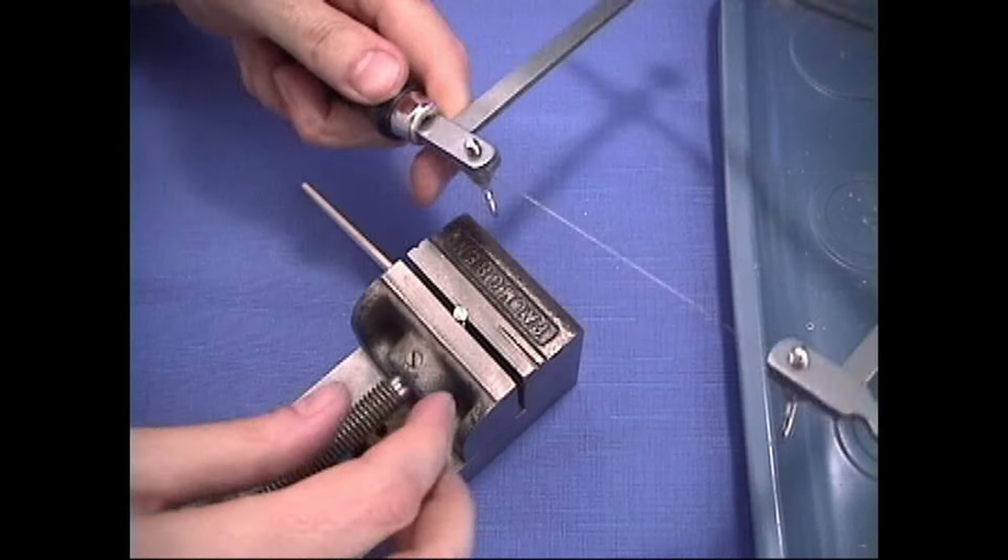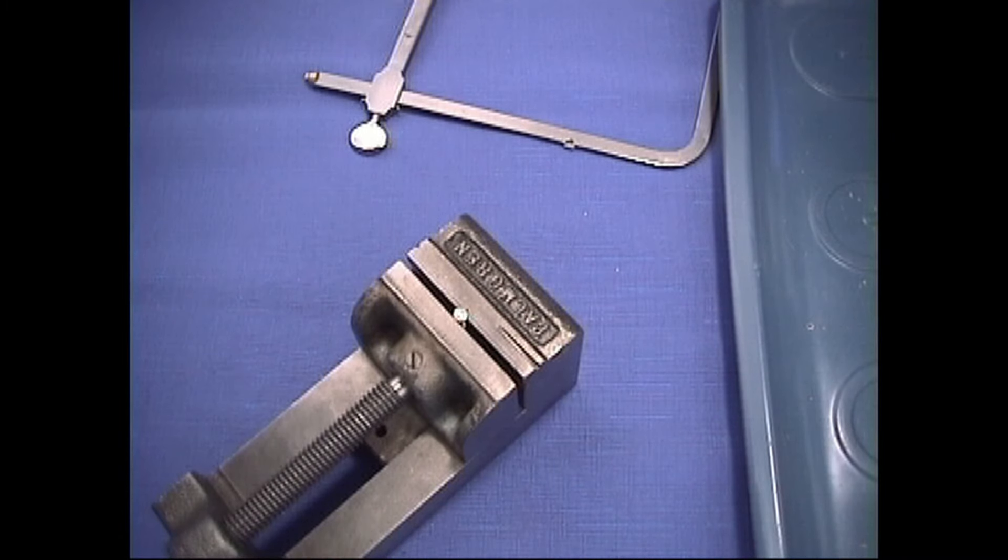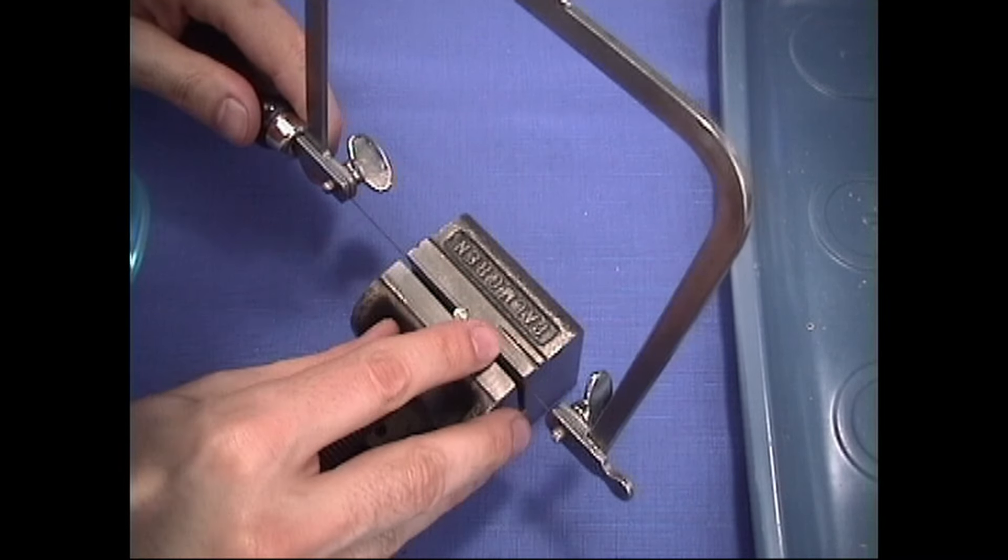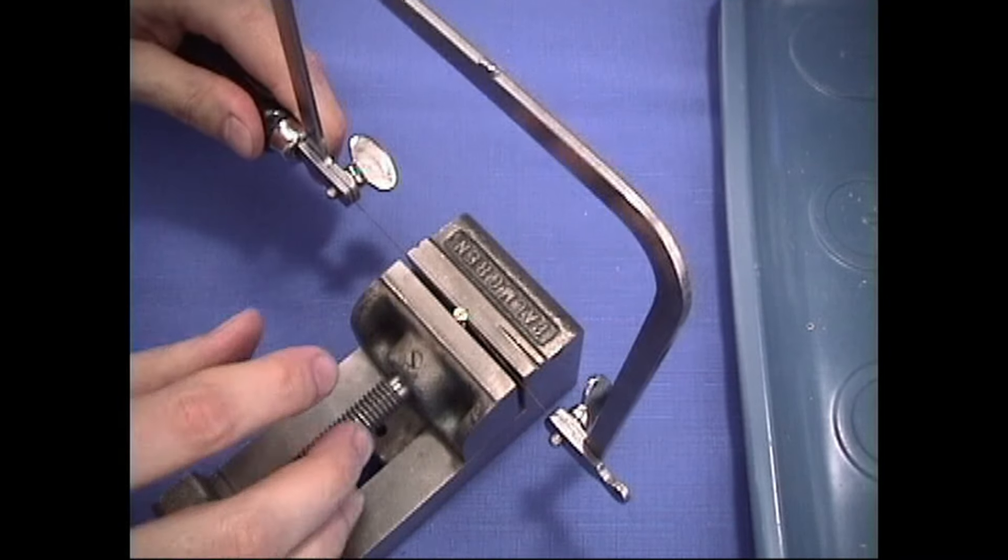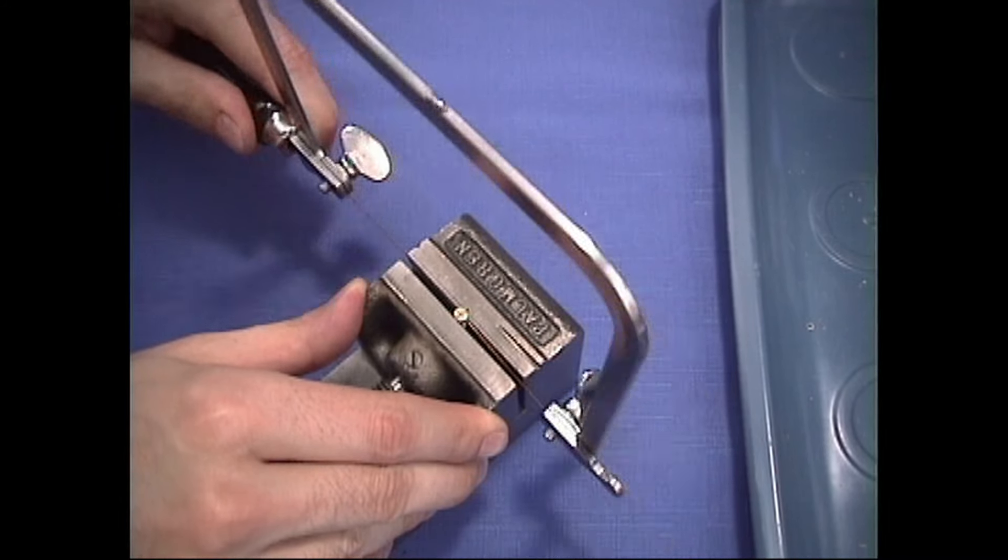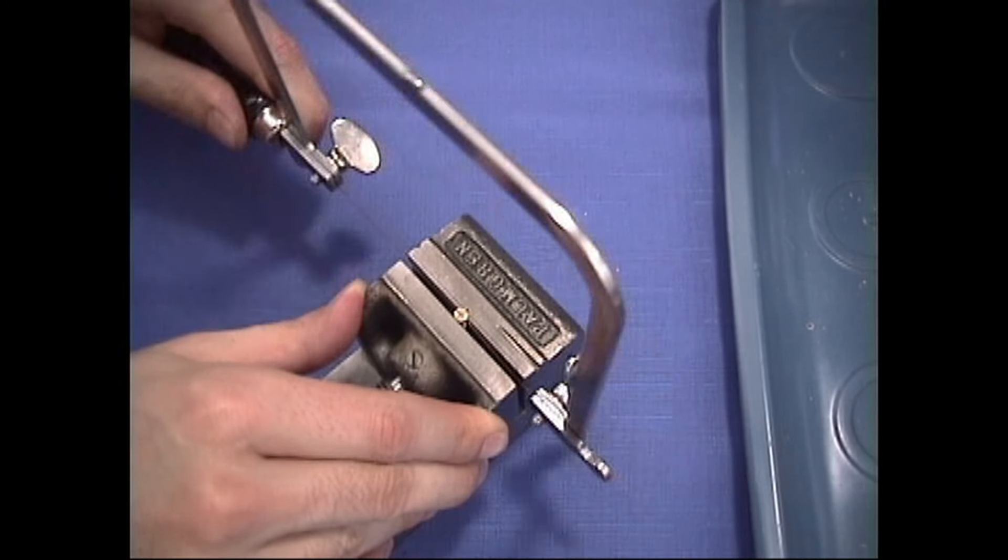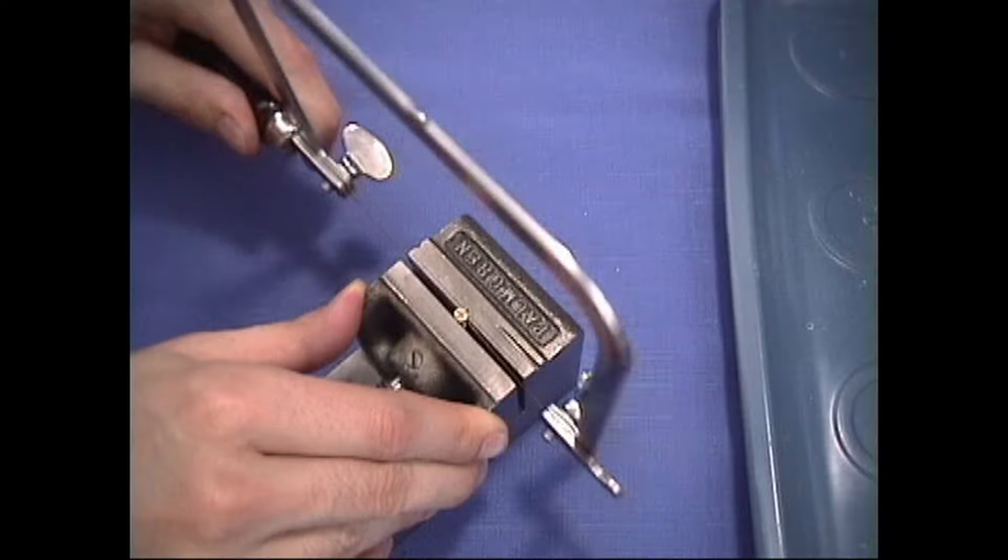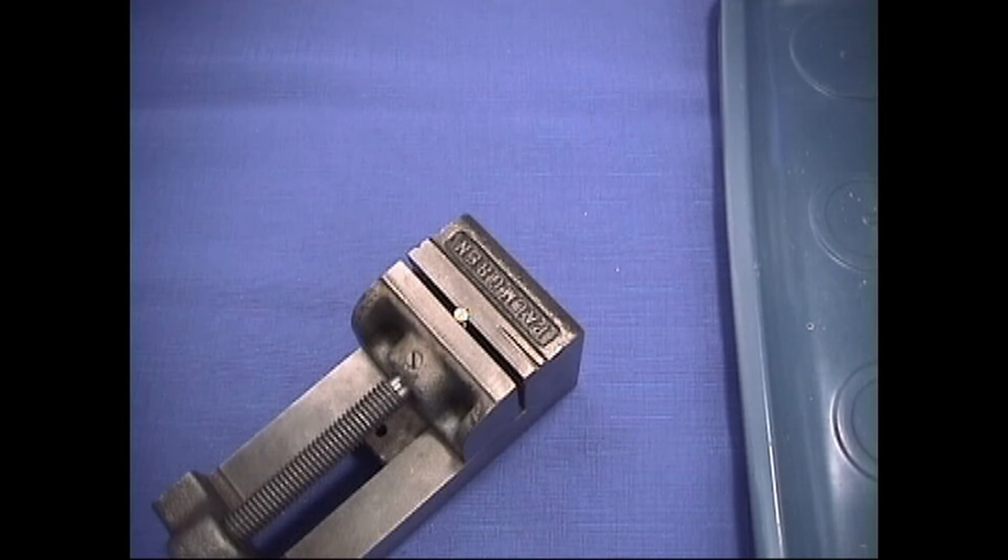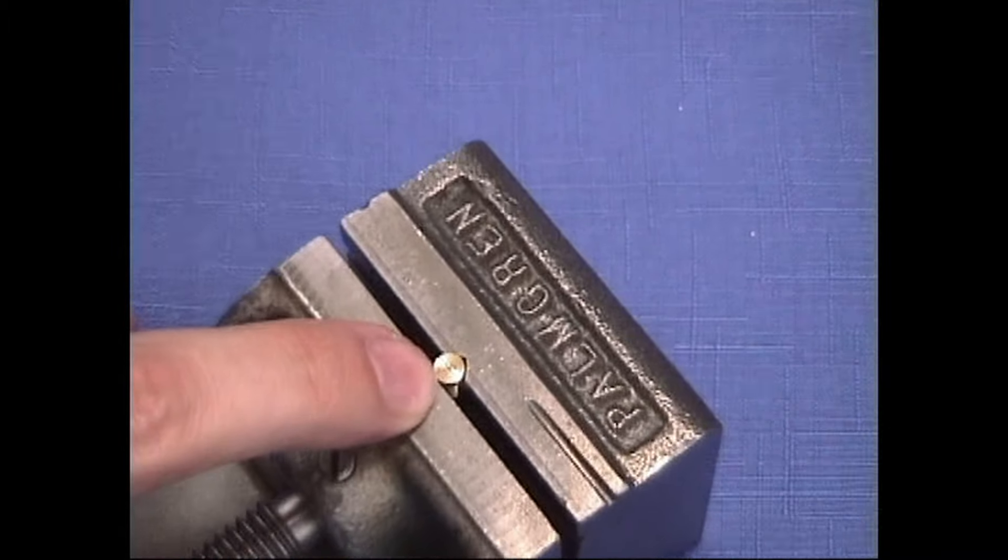Now what we'll do is we'll take a jeweler saw with a really fine blade and find the center. And there looks to be the center right there. And start sawing a groove. Get a groove started. Just like that. See a close up view of it. There's our little groove.